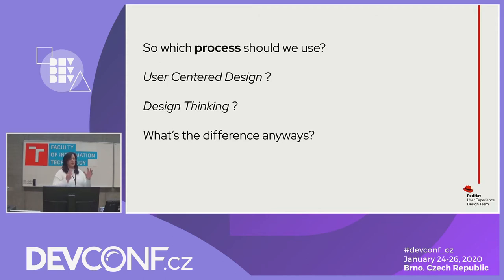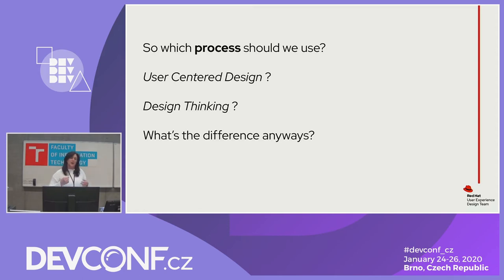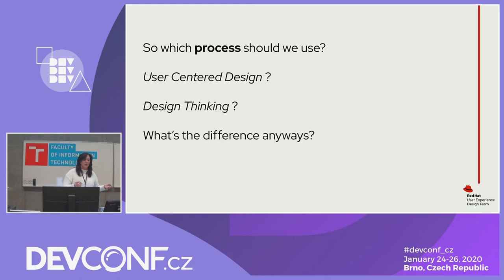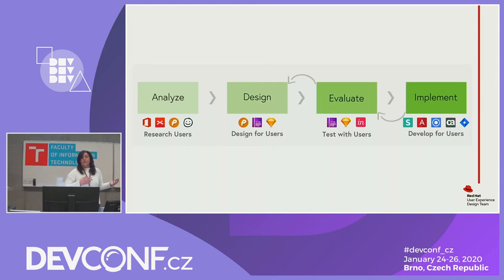Once you decide to do proactive design, which process should you use? There are two main processes in my mind: user-centered design and design thinking. But having been in the field a long time, these are just buzzwords around the same process — there's not much difference between them. If you do some searching online, read books, or go to classes, you often find different visualizations for the same processes.